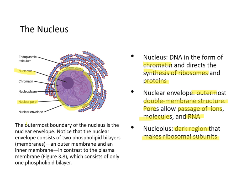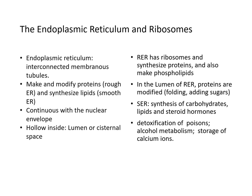The outermost boundary of the nucleus is the nuclear envelope. Notice that the nuclear envelope consists of two phospholipid layers — an outer membrane and an inner membrane — in contrast to the plasma membrane, which only contains one phospholipid bilayer. Next, what does the endoplasmic reticulum and ribosomes do?